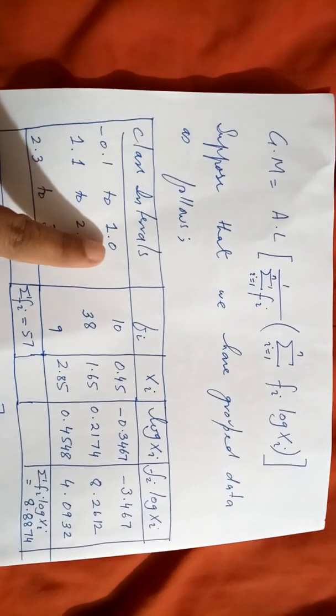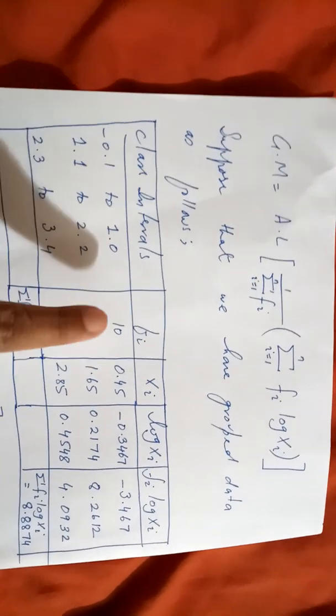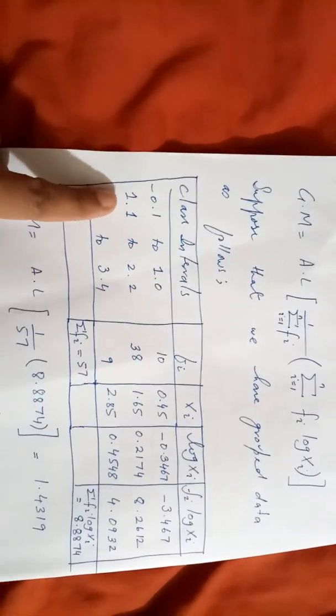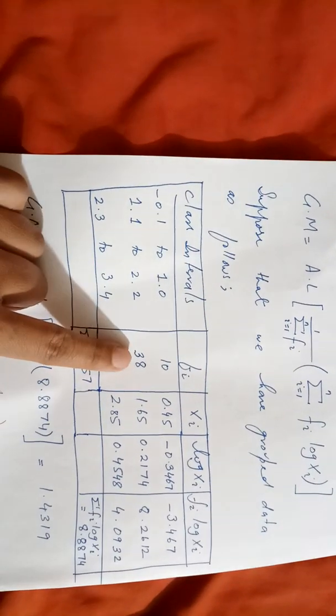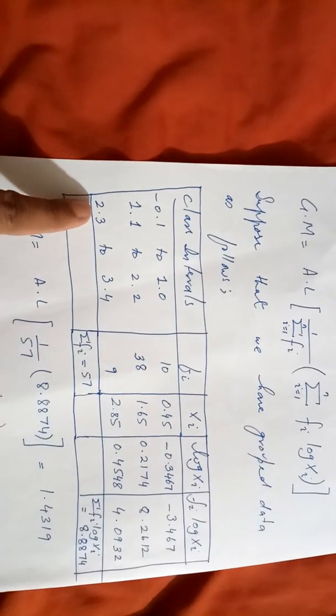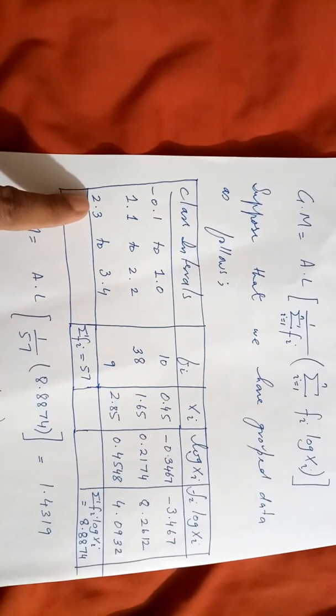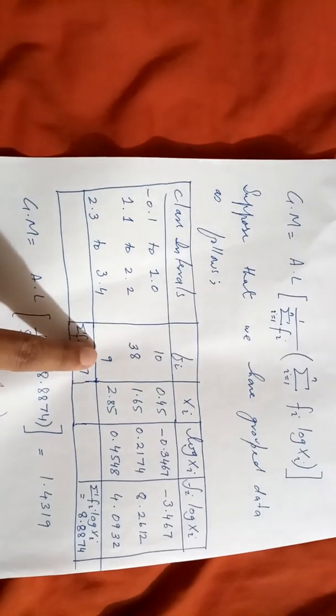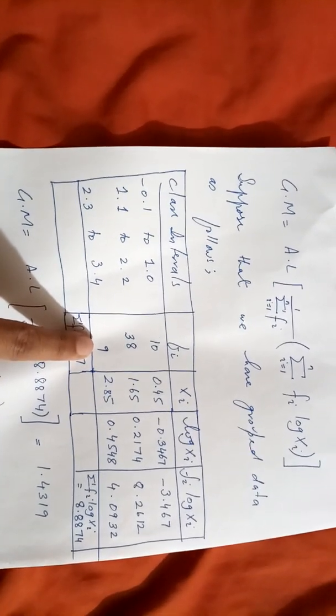That simply means that you have summed your frequency. One, right, and its frequency is 10. This is the second interval 1.1 to 2.2 and the frequency is 38. Similarly, this is simply the dataset, right? The class interval column and the frequency column. This will be given even from the exam point of view.